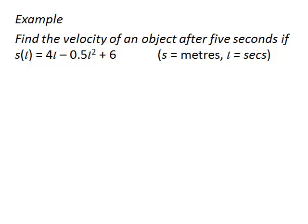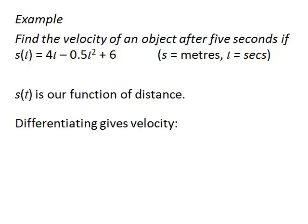Velocity is a rate of change. So we are going to take our function of distance and we are going to differentiate it to get our velocity. So our velocity function is our differentiated distance function and it is 4 minus t. The constant drops away. The 2 comes down. 2 times a half is 1. And the power becomes 1 less. So it becomes 4 minus t.